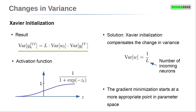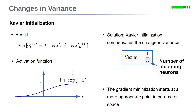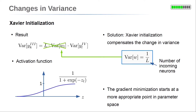The idea is to compensate the increasing variance at initialization by using a different weight initialization than the standard normal distribution. The Xavier initialization takes the number of incoming neurons into account: the variance of the distribution function for weight wl is set to 1 over capital L, where L is the number of neurons of the preceding layer. Looking at the equation, the L cancels with the variance of wl for this choice, compensating the change in variance. Consequently, the variance of the outputs of the neurons is approximately the same for all layers, and the gradient minimization starts at a more appropriate point in parameter space.